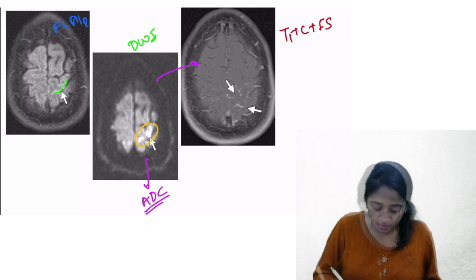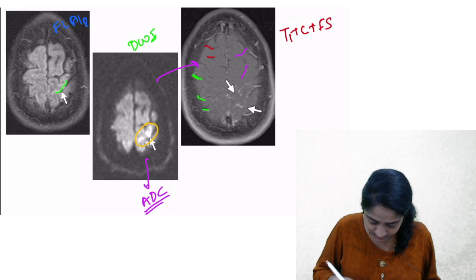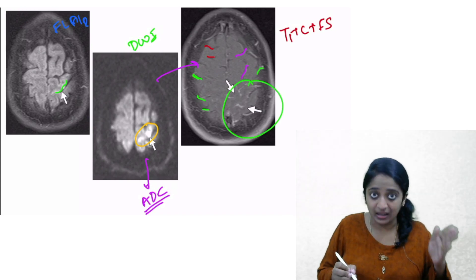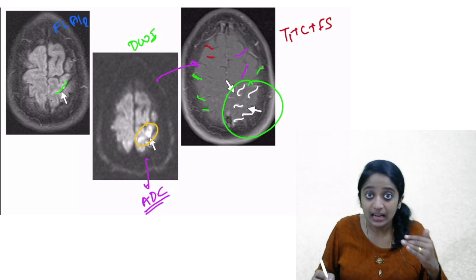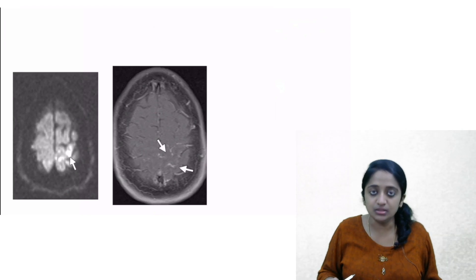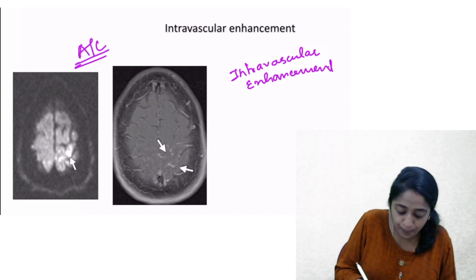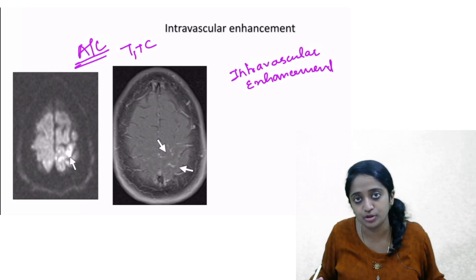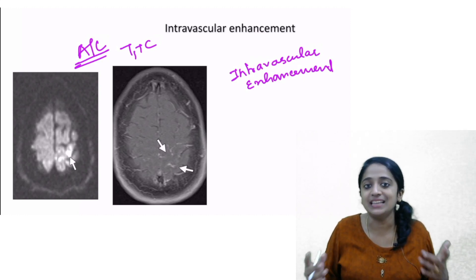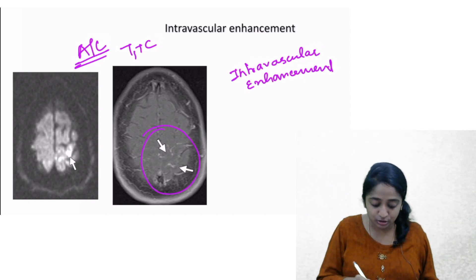Comparing right and left sides on the post-contrast T1 image, on the right side I see cortical sulci with a few vessels. On the left side, I also see cortical sulci, but compared to the right side, there is an increase in the number of vessels in the cortical sulci on the left. This stark contrast — left more prominent than right — is known as intravascular enhancement. This is an early sign you look for in acute infarct on post-contrast sequences. The cause is increased collateral vessel formation, as the body tries to re-establish perfusion after the acute vascular event by developing collateral vessels.